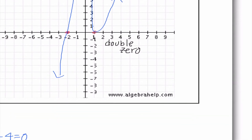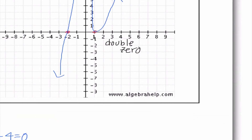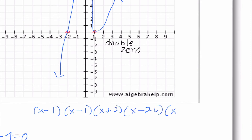Let's write these as factors. Our factors would be x minus 1, x minus 1, x plus 2, x minus 2i, and x plus 2i. That would be kind of a pain to multiply out, but it's helpful for us to see that's how this concept connects to what we've done previously.